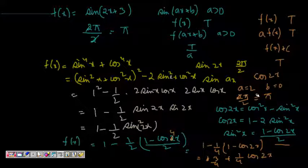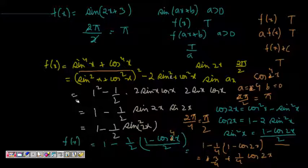So the period of, so a is here 4, so it becomes 2 pi by 4, which is pi by 2. So answer will be pi by 2 for this function, the period will be pi by 2.